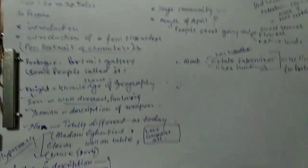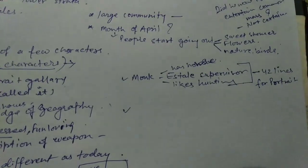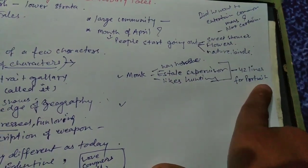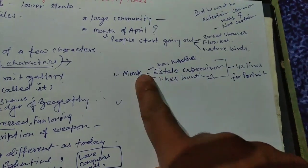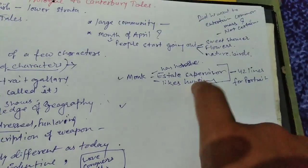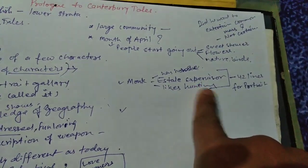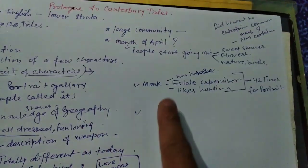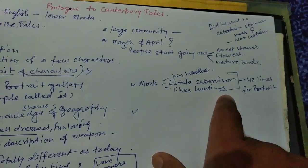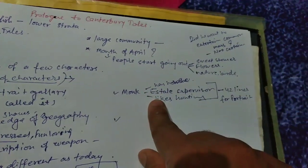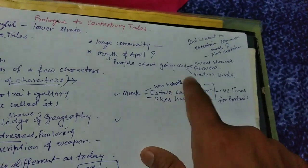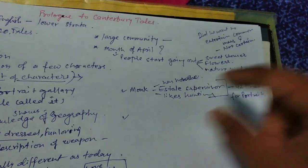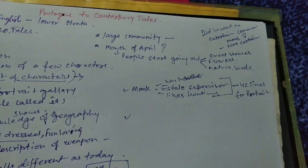This question about 'Love Conquers All' is asked in exams. Let's talk about the next character: the Monk, who is described in 42 lines — a pen portrait. He had a great estate with land and things, and he liked hunting. He had horses and an estate.